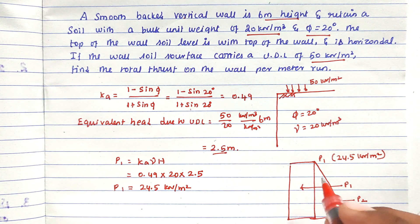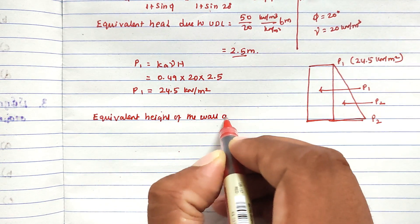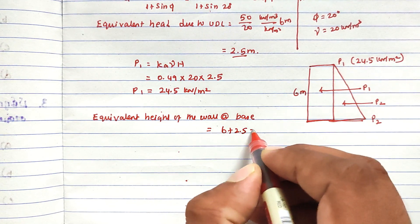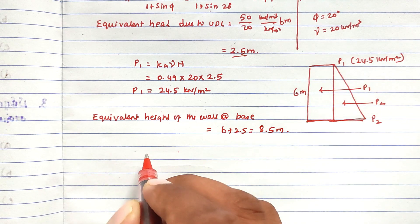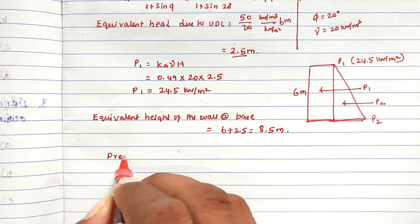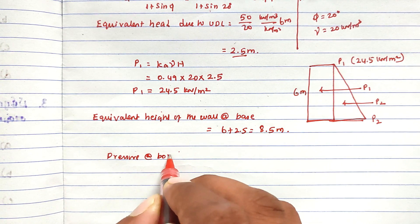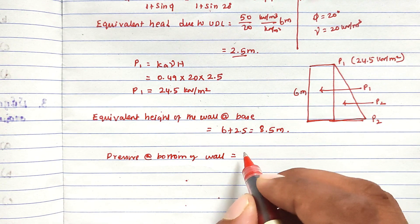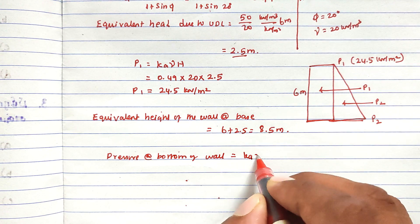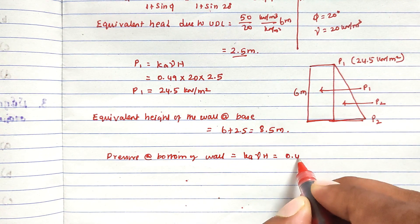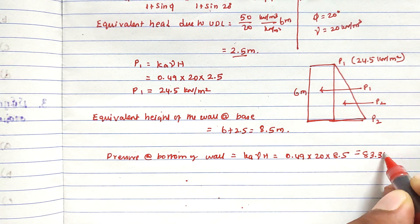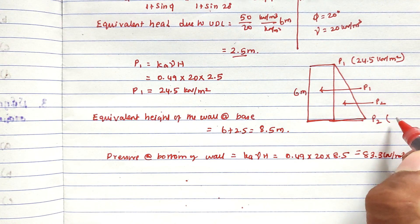Next, we have to find out the p2 value at the base of the wall. The total height is 6 meters plus 2.5 meters equivalent head, giving 8.5 meters total. Using the same formula, p2 equals Ka into gamma into h, so 0.49 into 20 into 8.5. Solving this, we get 83.3 kilo Newton per meter square at the bottom of the wall.